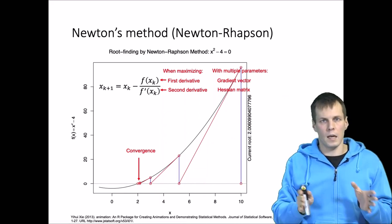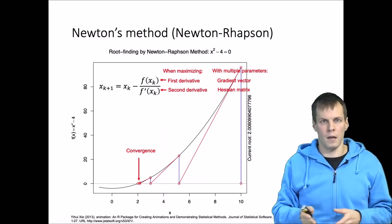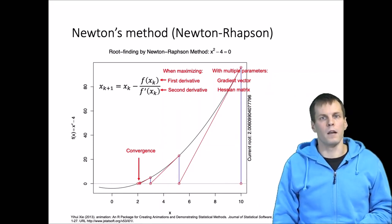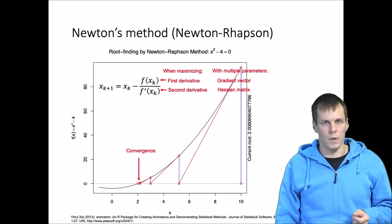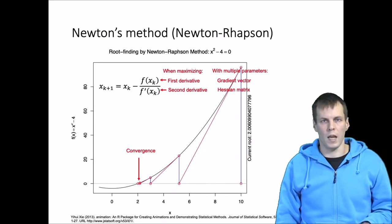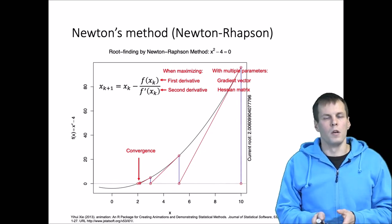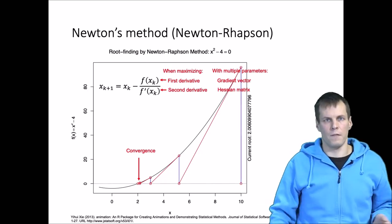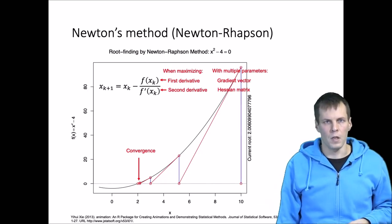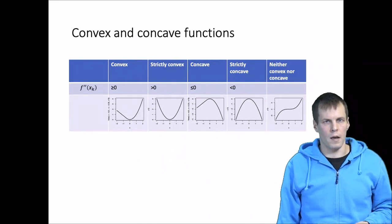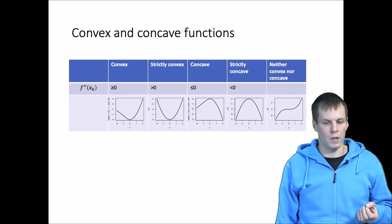How exactly this process works is explained in another video, but here we focus on the Hessian matrix and what it means for the Hessian matrix to be convex or concave, or not negative semi-definite. Let's take a look at what convex and concave functions are and what it means for a function to be strictly convex or strictly concave.